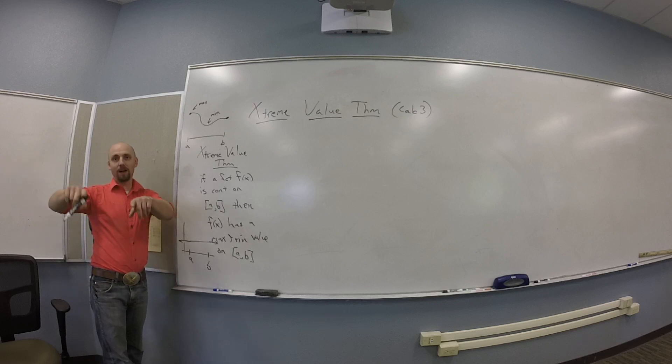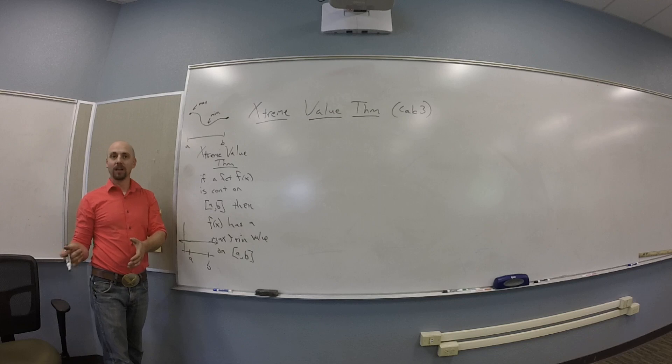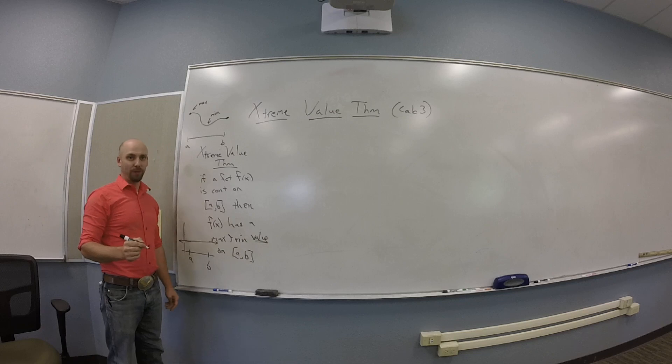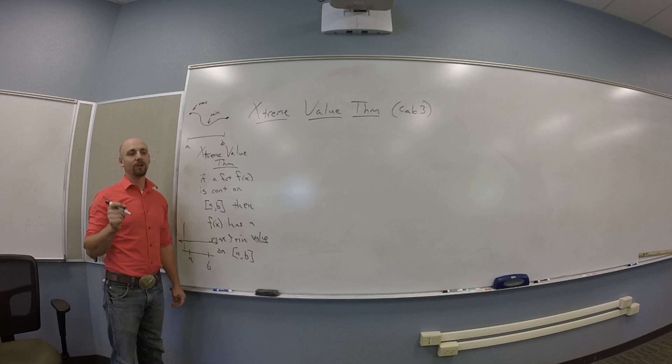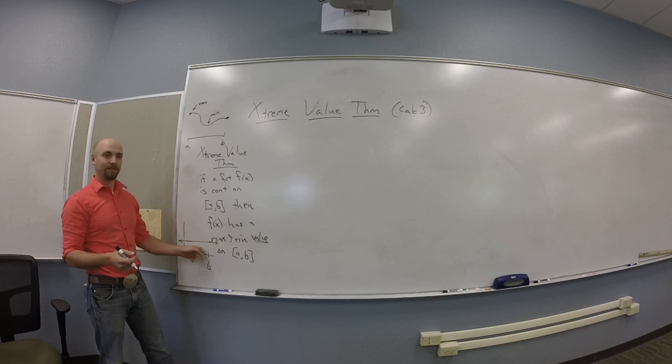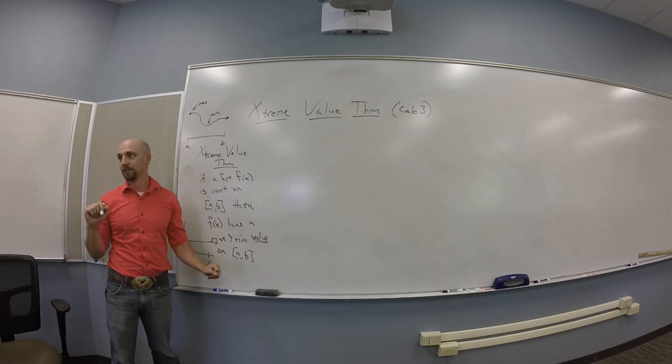It's not a point on the graph. It's really about the maximum y value that this function attains, right? That's the value part. This is an output thing. This is saying there is a biggest output, not there's a highest point on the graph. That's not necessarily true. There could certainly be lots of them. All these points have the same height. But there is a biggest height attained and a smallest height attained. You guys cool with that?